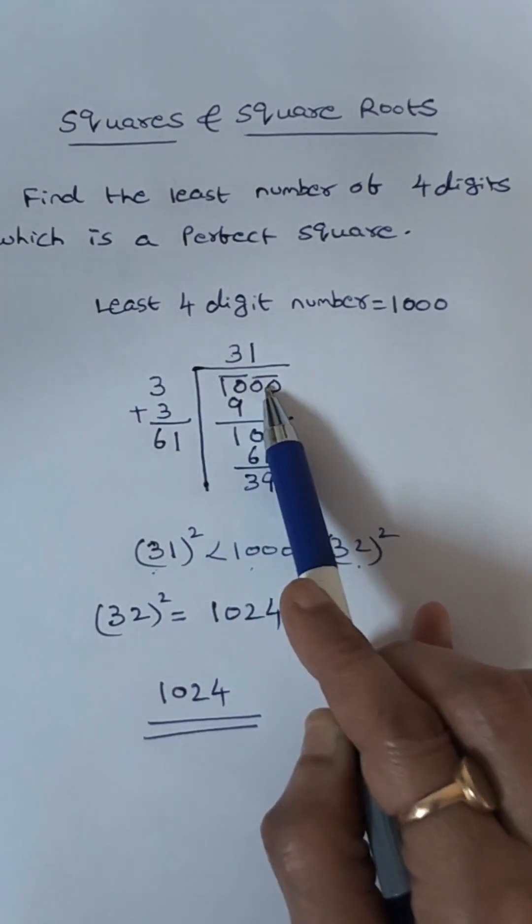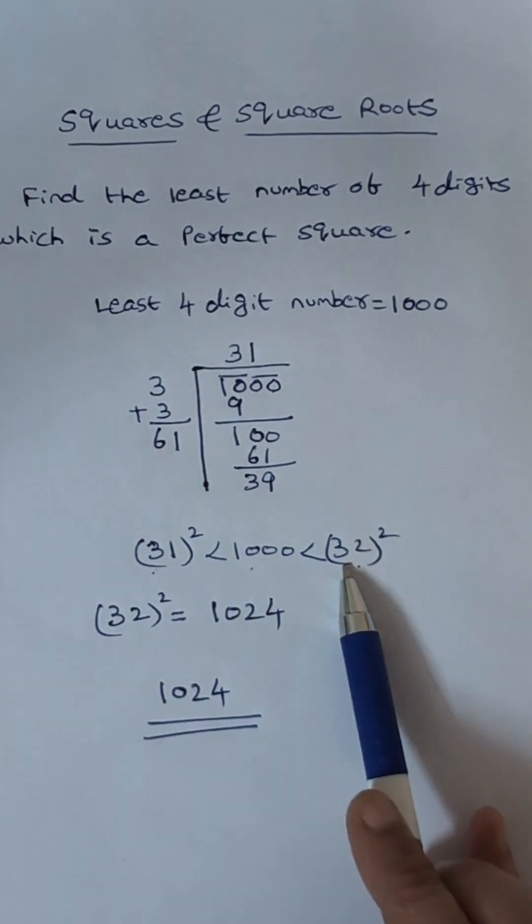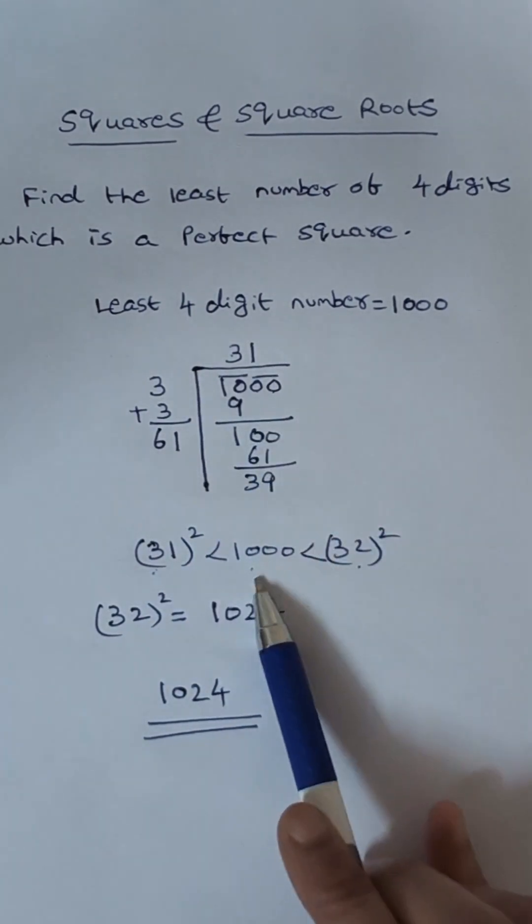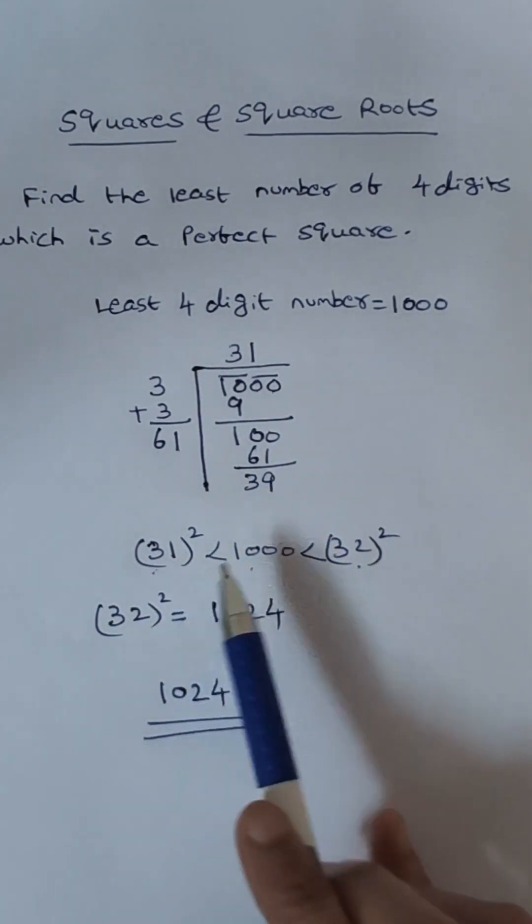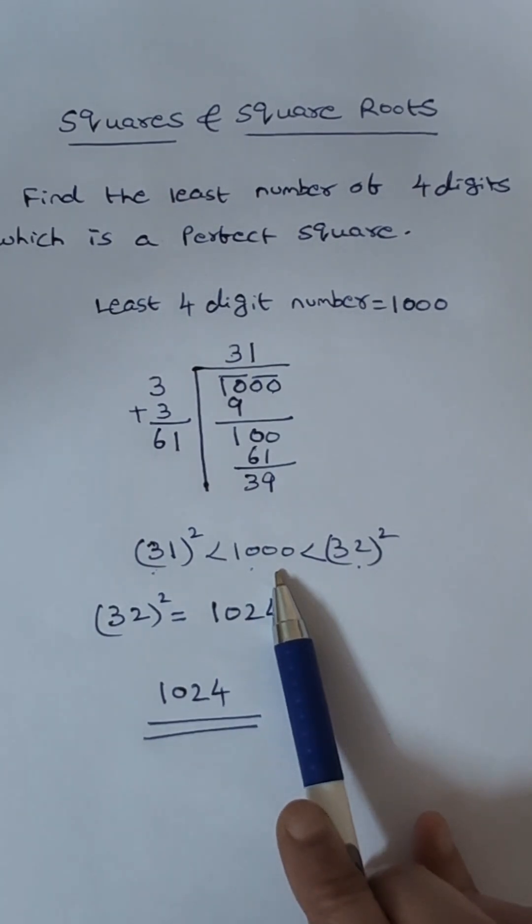Now this number 1000 lies between 31 square and 32 square. So 31 square is less than 1000, less than 32 square. So 31 square is less than 1000 which is a 3 digit number.